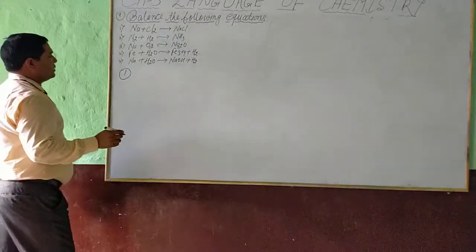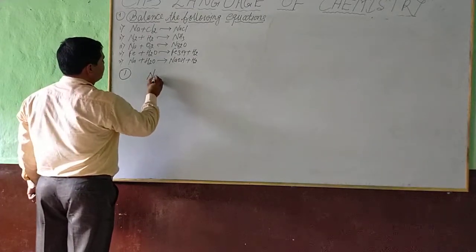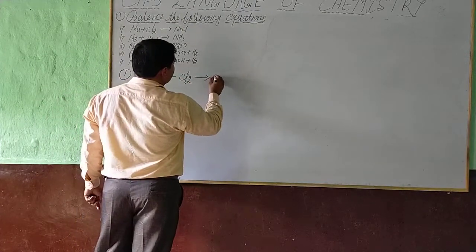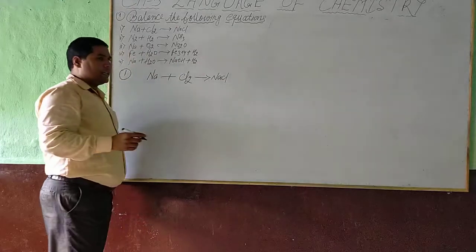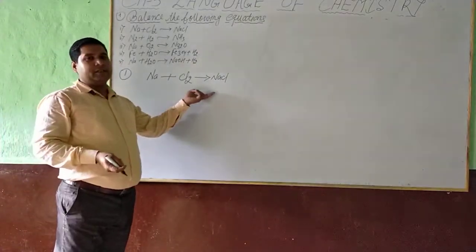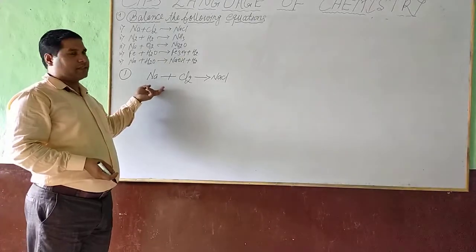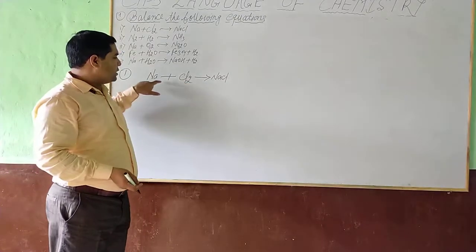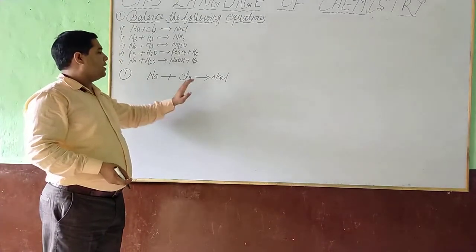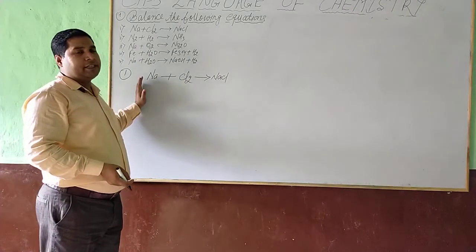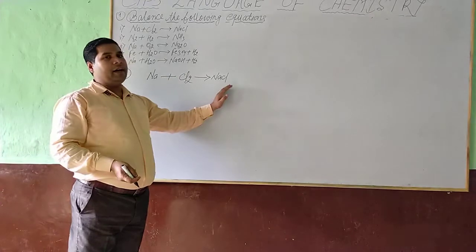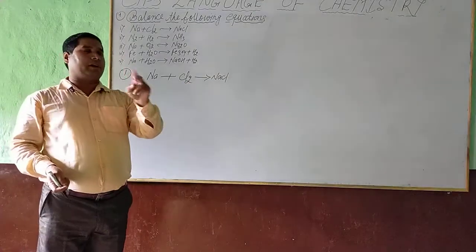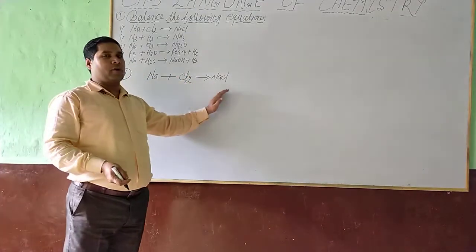In question number 1, sodium reacts with chlorine and forms sodium chloride. Before I proceed to balance the chemical equation, we have to know something about the chemical equation. In between the chemical equation, the arrow sign separates two parts — the back of the arrow is known as the reactant and the front of the arrow sign is known as the product. So a chemical equation has two parts: the reactant part and the product part.